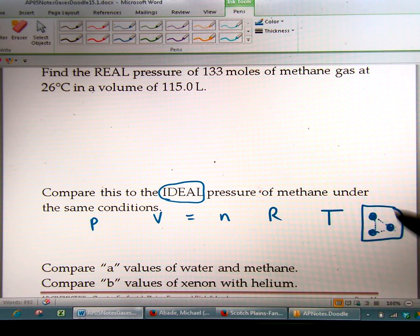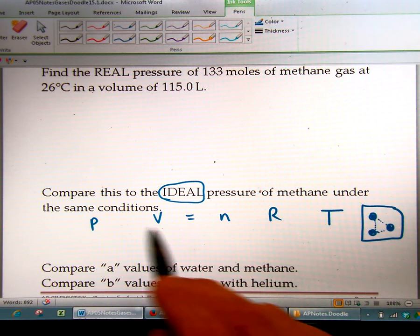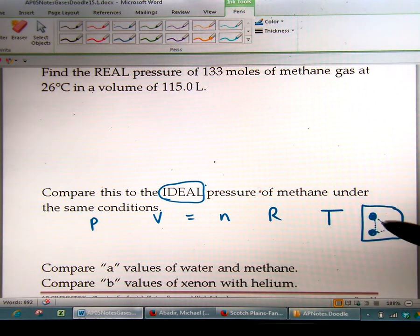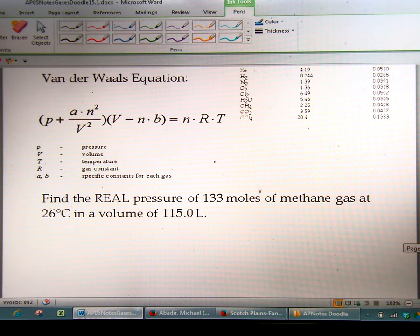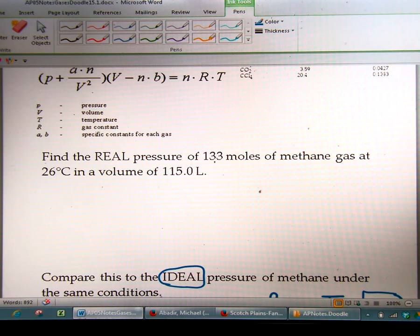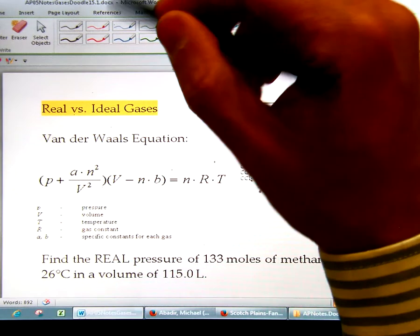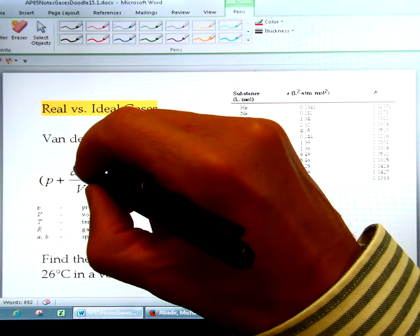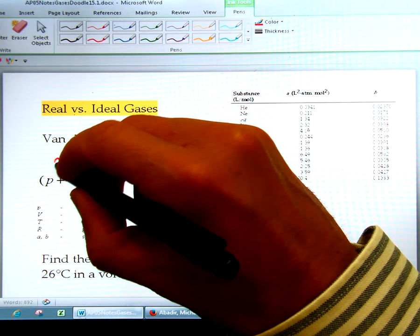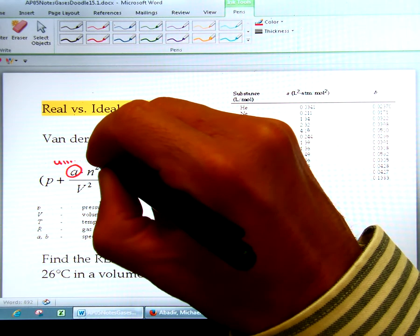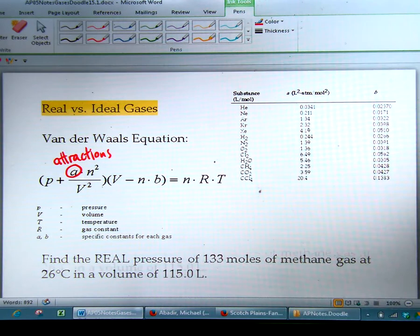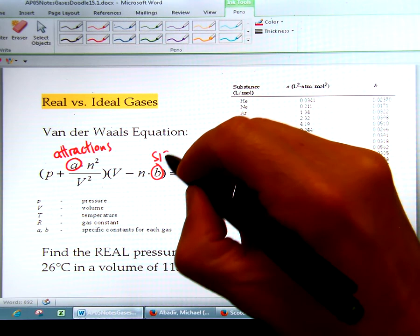So because we're making these two assumptions, the ideal gas law is not perfect. It's ideal only if they take up no space and have no attractions. But since in real life they do, we have what's called the real gas law equation, which is the Van der Waals gas law equation, which takes into consideration both attractions and size of particles. So we have two corrections for these things. The A is the correction for attractions, and the B is the correction for size.